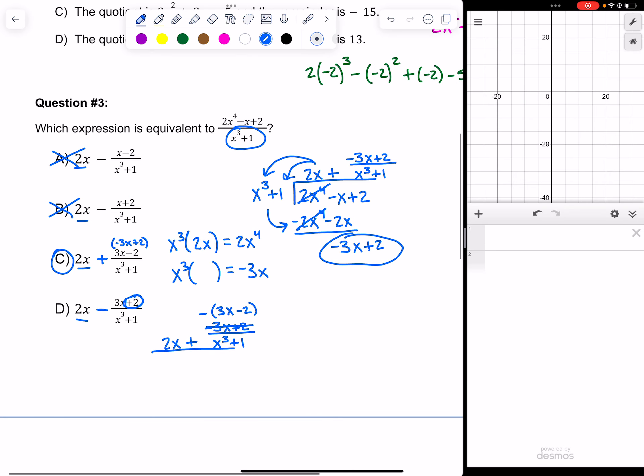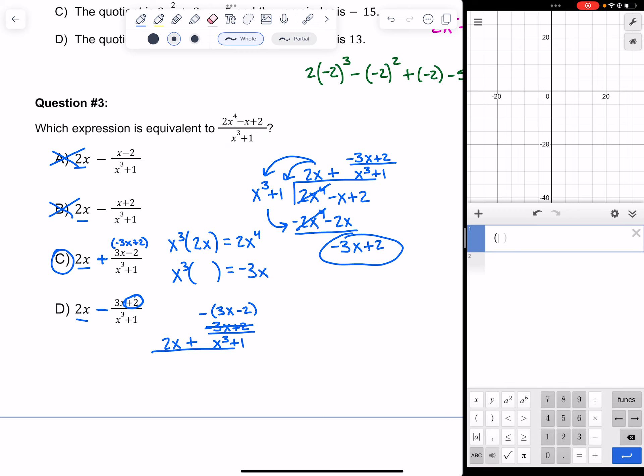What I said earlier would definitely help make sure you have the right answer, because you can type this in Desmos and see which one is equivalent. When they're equivalent, the graph matches. So I have 2x to the fourth power, minus x plus 2, divided by x cubed plus 1.